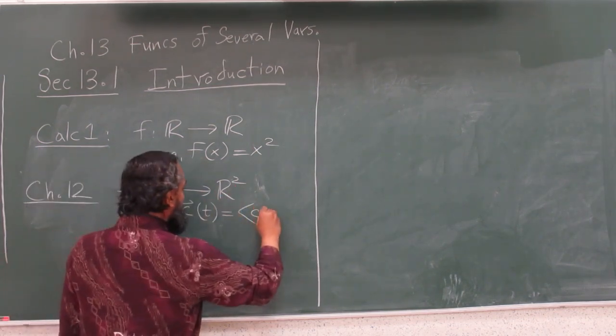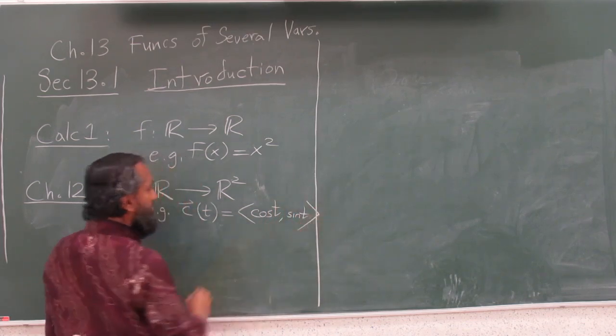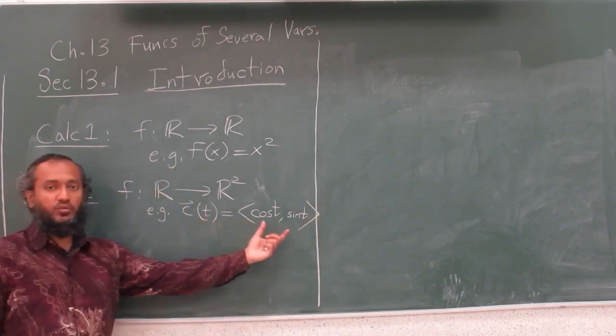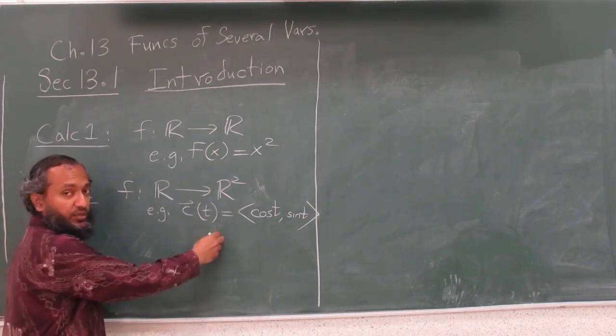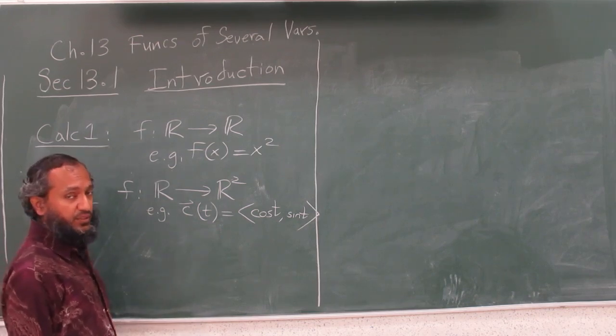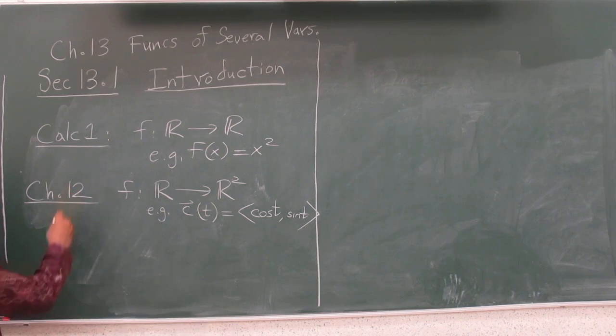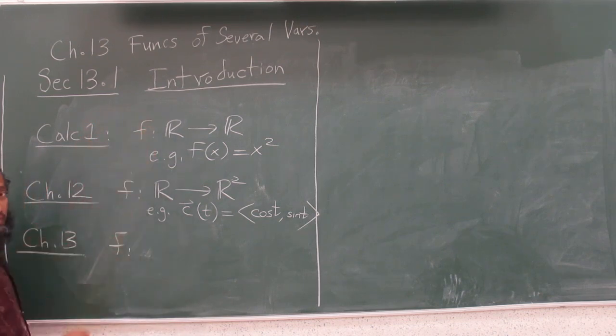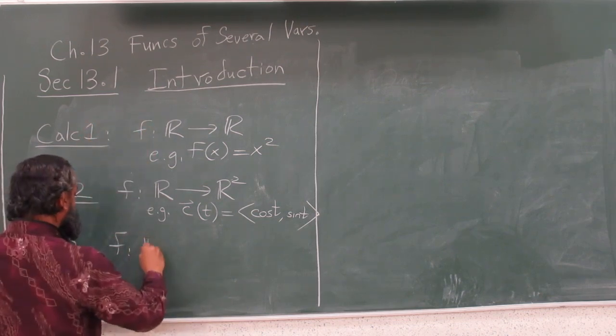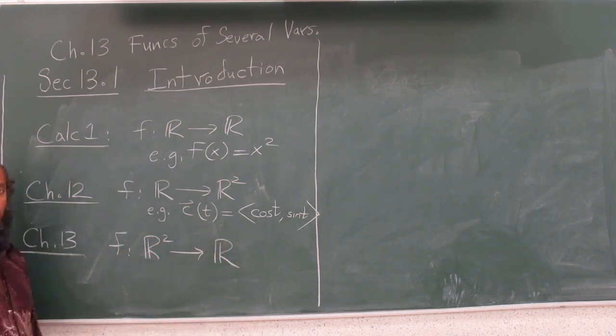Similarly, we could do R to R³, parameterization of curves in 3D space. In this Chapter 13, we are talking about functions of several variables - multiple variables and a single number as the output.